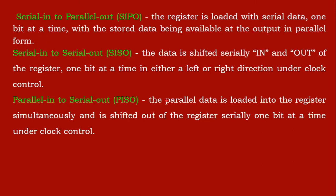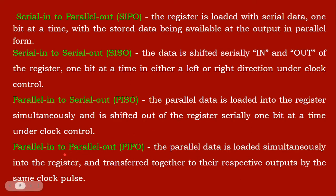Parallel In Serial Out (PISO): as the name implies, parallel data is loaded to the shift register simultaneously, and one bit at a time is given as output. Parallel In Parallel Out (PIPO): the data is input in parallel simultaneously to all the registers, and in a single clock pulse all the data is transferred to the output. This is why all four types of shift registers are categorized based on how data is input and output under clock control.